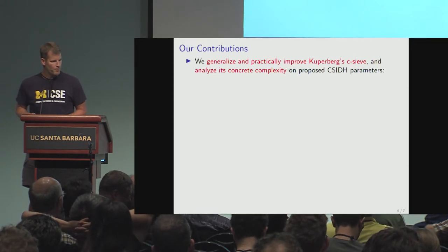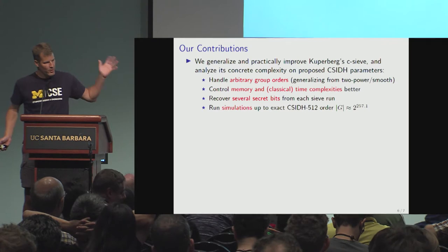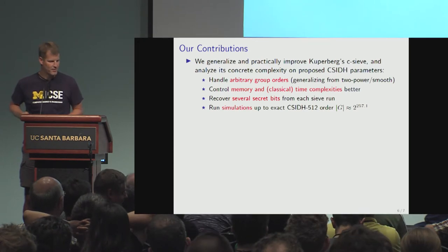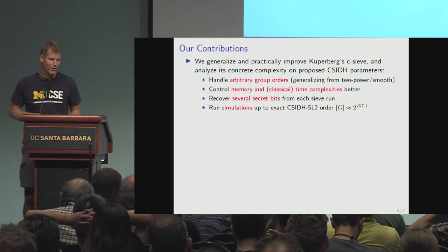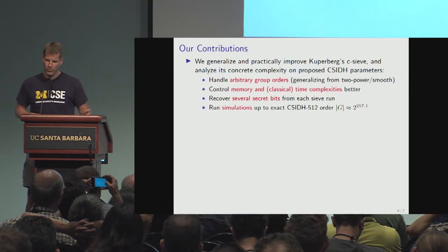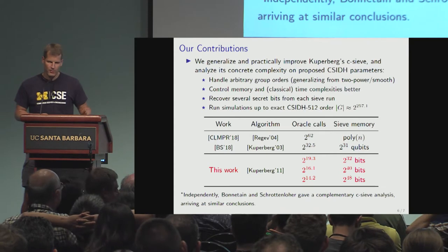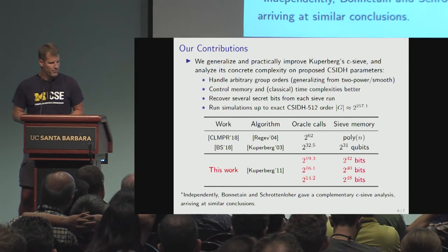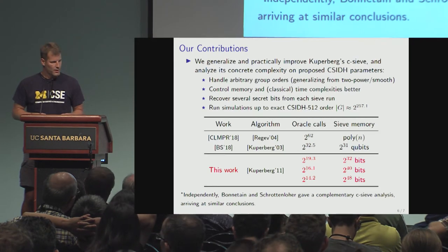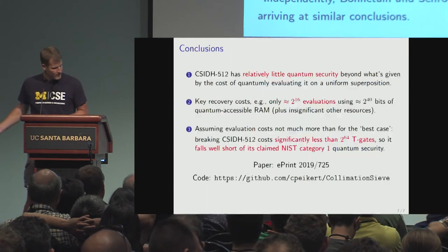We improve practically Kuperberg's collimation sieve algorithm and analyze it in the context of Seaside parameters. Notably, we give code and actually run simulations of this quantum algorithm — it's actually pseudo-classical; you can simulate almost all of it and just fake one small part, and run the whole thing on a regular computer. We run it on group orders all the way up to the real Seaside group order. The final results show the number of oracle calls can be brought down to something like 2 to the 14 with completely reasonable amounts of classical memory. Moreover, the memory can be accessed quantumly with existing methods using quantum computation that is much lower than the rest of the attack.